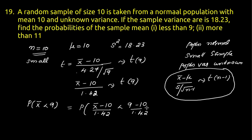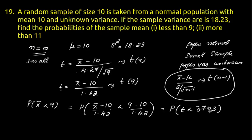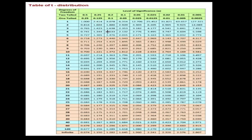For the probability that X-bar is less than 9: P(X-bar < 9) equals P((X-bar minus 10)/1.42 < (9 minus 10)/1.42), which equals P(t < minus 0.703) with 9 degrees of freedom. Looking up t equals 0.703 in the t-table with 9 degrees of freedom gives a one-tailed probability of 0.25.